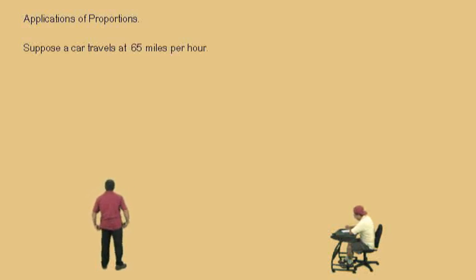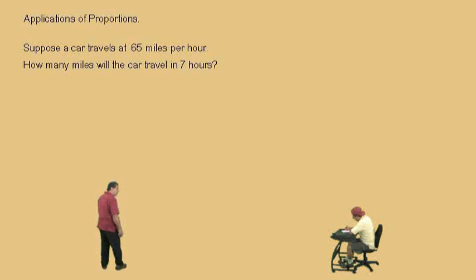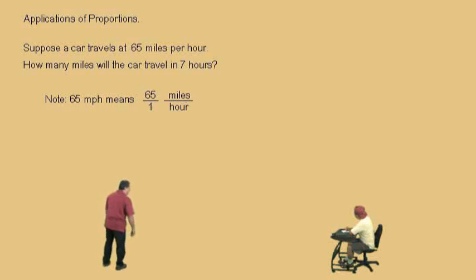Now, suppose a car travels 65 miles per hour. How far does it go in 7 hours? Well, first, let's talk about 65 miles per hour. What that is, is a ratio of 65 to 1, but it's 65 miles to 1 hour. And so, we'll go ahead and write our ratio over there.